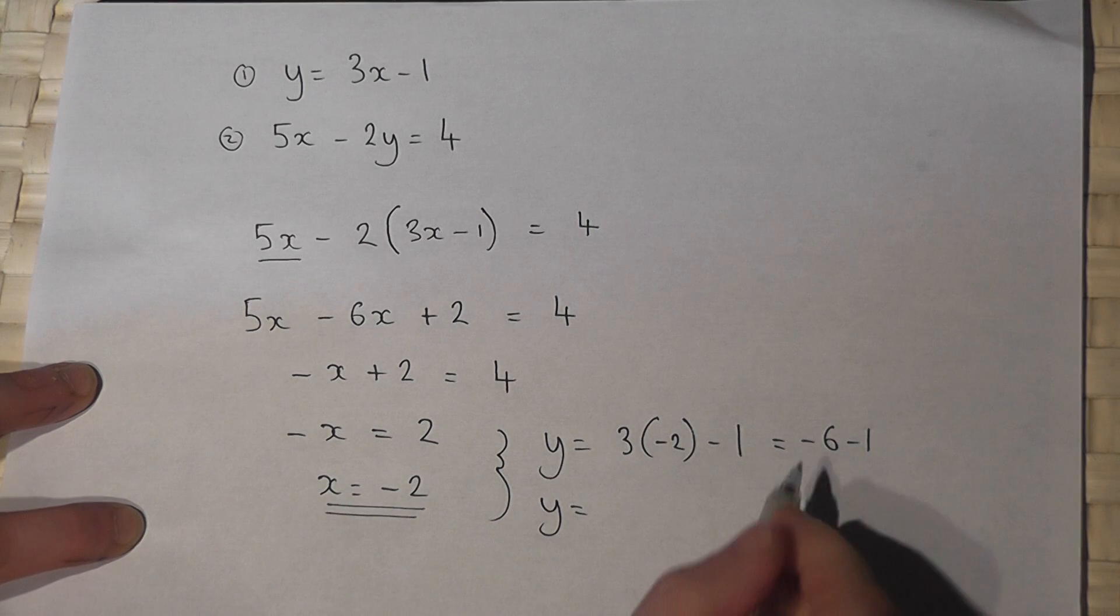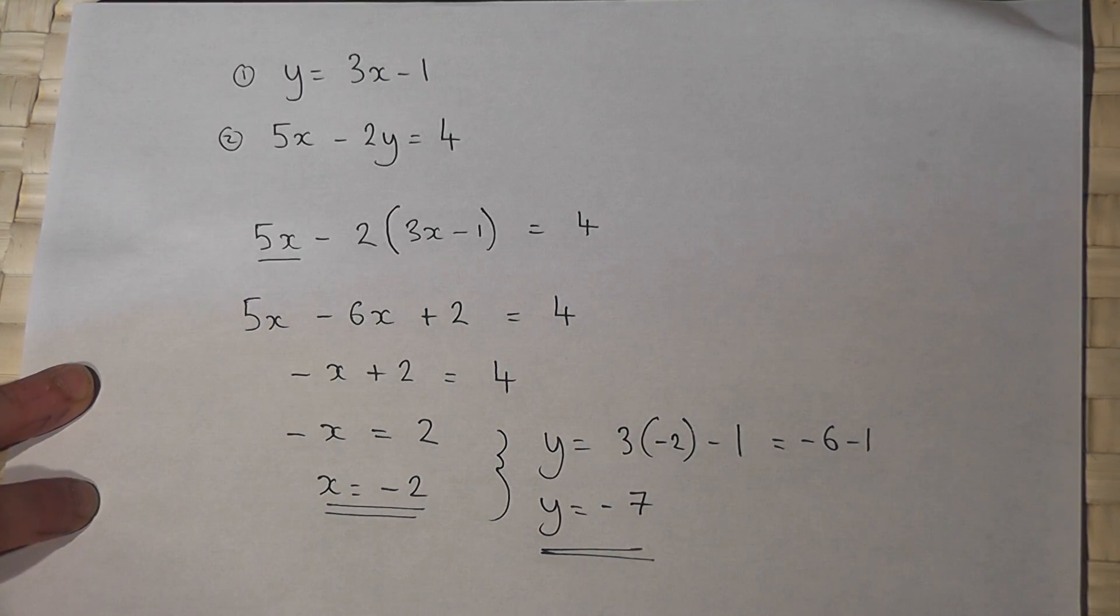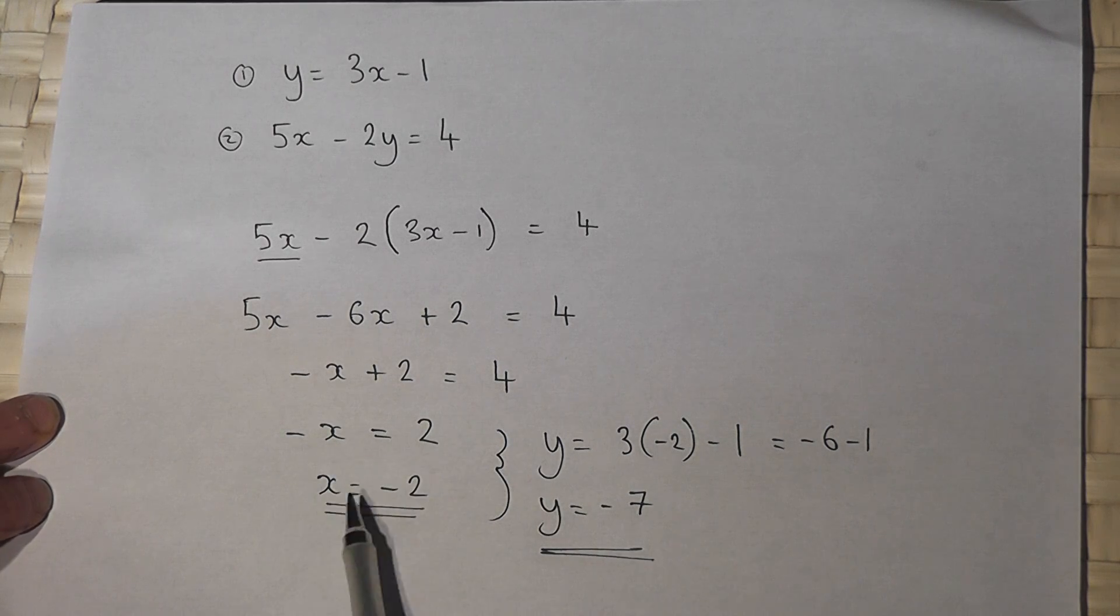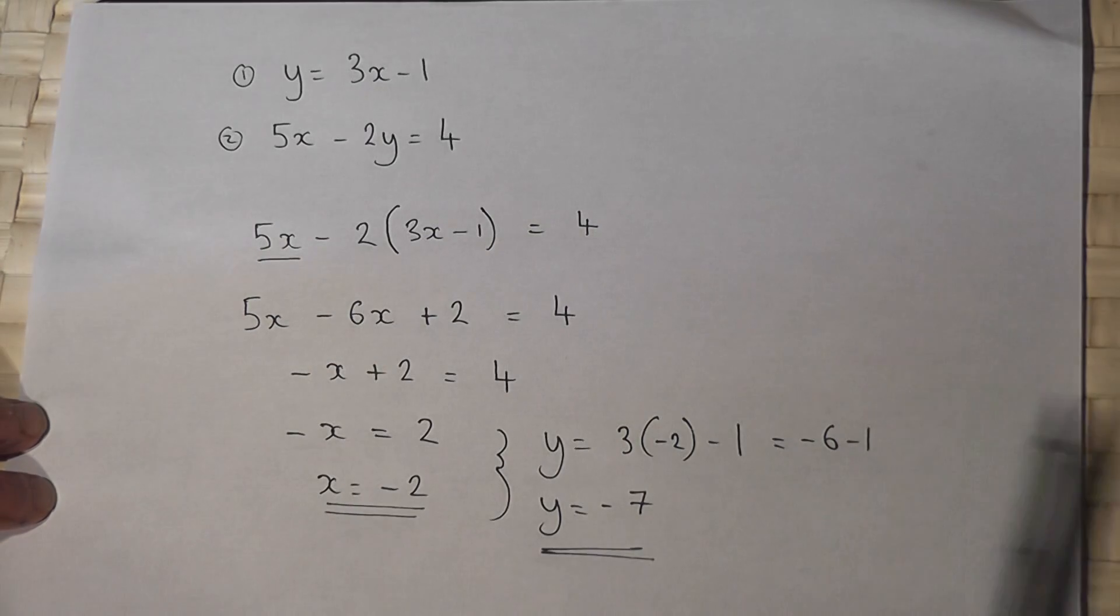Y just equals minus 6, take 1, minus 7. So the two solutions, x equals minus 2 and y is minus 7, satisfy both of the equations.